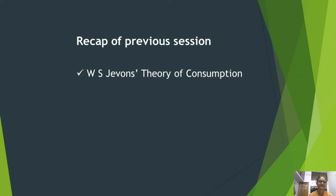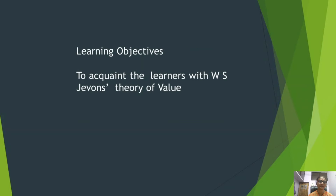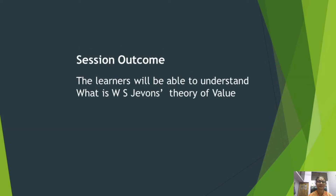In the previous session, I hope you have understood and learned the contribution of Jevons to the theory of consumption. In this session, you are going to study about Jevons' theory of value. The objective of the session is to acquaint the learners with W.S. Jevons' theory of value. The outcome is that learners will be able to understand Jevons' theory of value and his concept of exchange and market.